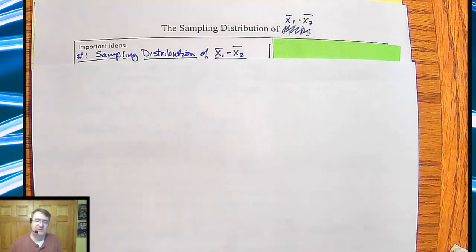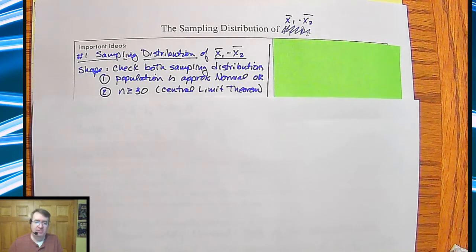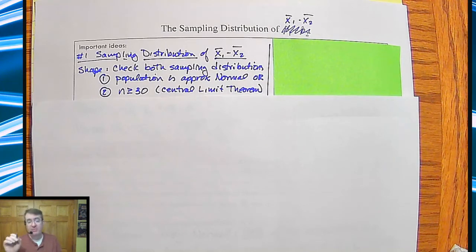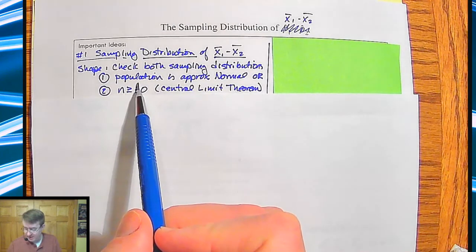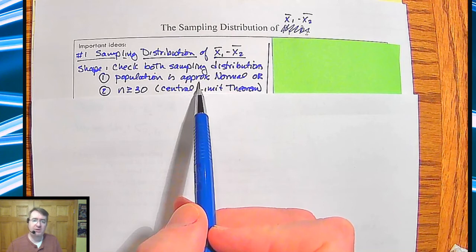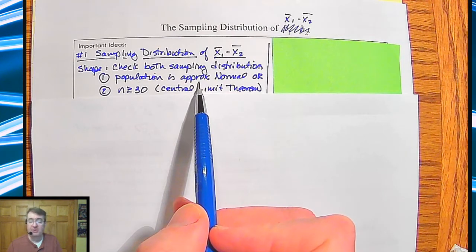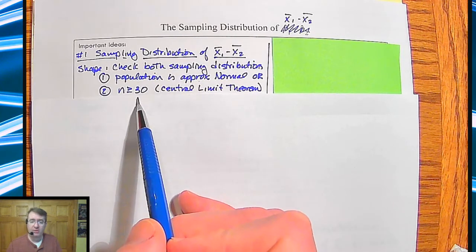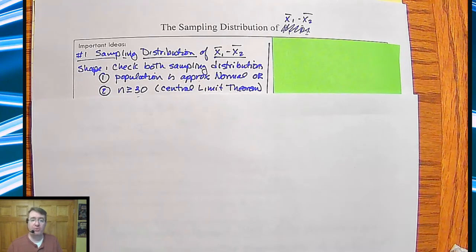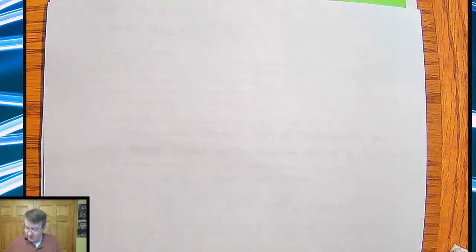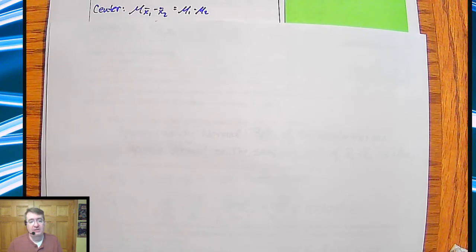So sampling distribution of the difference of means. A couple of things. First of all, remember, just as always, you need to check the shape. It should be normal. The two ways that you can check the normality. Both different populations need to be normal. And the way that you check that is either the population that you're taking either sample from is approximately normal, or your sample size is greater than or equal to 30. This has to be true for both different samples for this to work. What comes next after shape? You got it. Center.